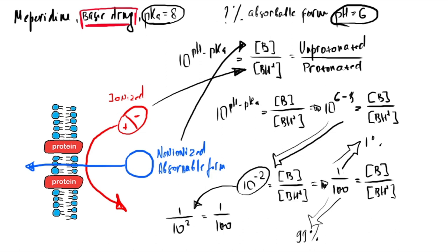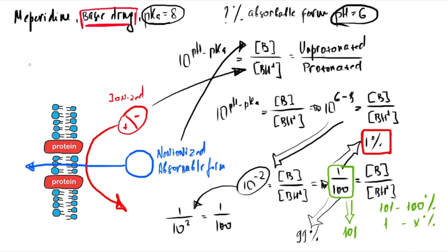To calculate the percentage: we have 1 part unprotonated and 100 parts protonated, so total is 101 parts. Using proportion: 101 parts = 100%, and 1 part = x. Therefore x = (100 × 1) / 101 = 0.99, or approximately 1%.